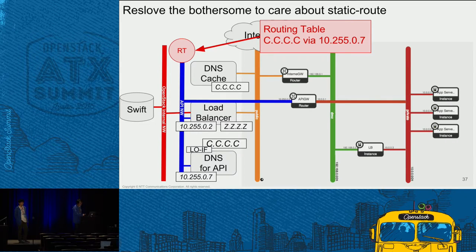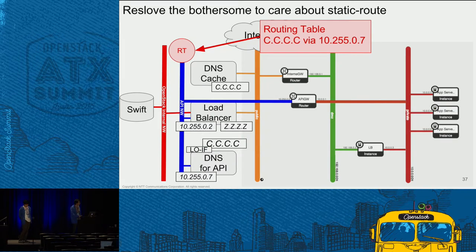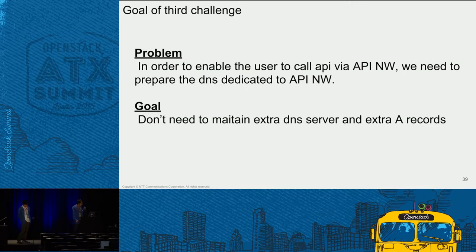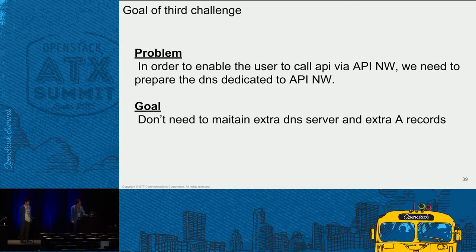So we added the extra router to this diagram, which is what Masaki showed earlier as our implementation. We actually need at least two routers to avoid a single point of failure. Lastly, I will explain the challenge against the problem that we need to maintain a DNS dedicated to the API and extra records. The problem is that in order to call API via the API network, we need to prepare a DNS server dedicated to the API network. But it's a burden that we need extra DNS just to call API. So the goal of the third challenge is to call API from the private network without an extra DNS server.